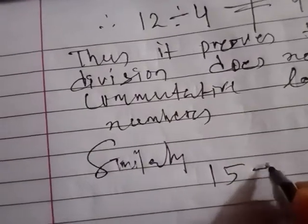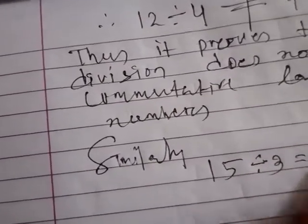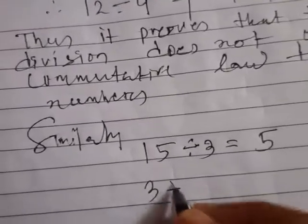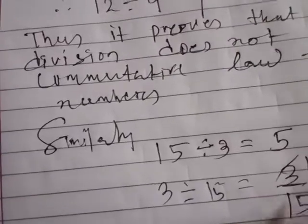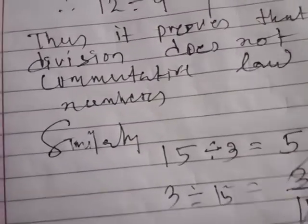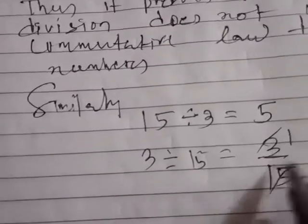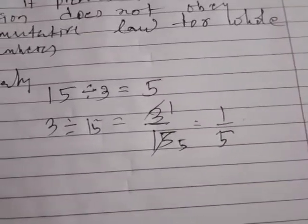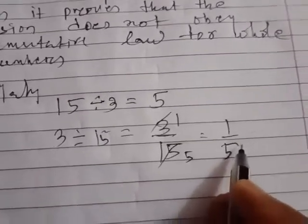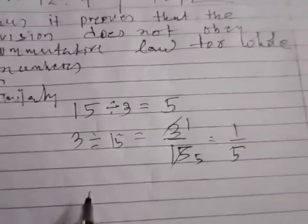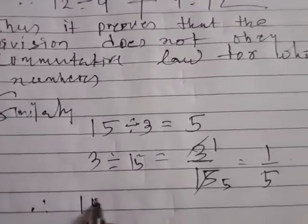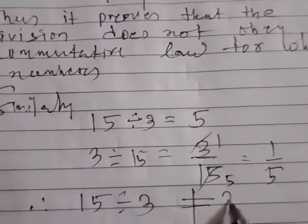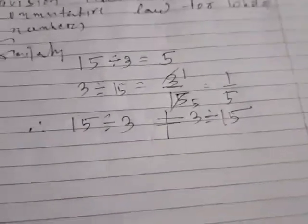Another example: 15 divided by 3 equals 5. And 3 divided by 15 equals 1 upon 5. Hence 15 divided by 3 is not equal to 3 divided by 15.